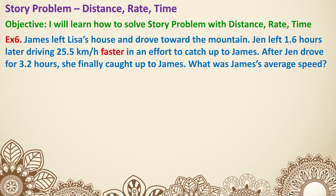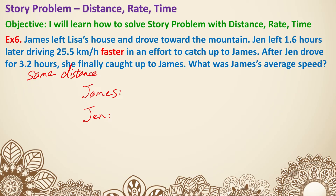Example six: James left Lisa's house and drove towards the mountain. Jen left 1.6 hours later driving 25.5 kilometers per hour faster in an effort to catch up to James. After Jen drove for 3.2 hours, she finally caught up to James. What was James' average speed? The key, again similar to the previous example, is the same distance.